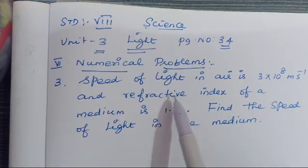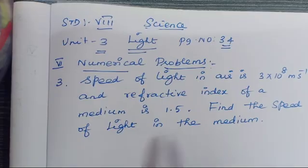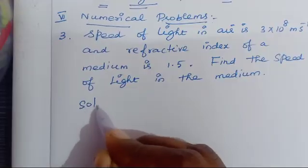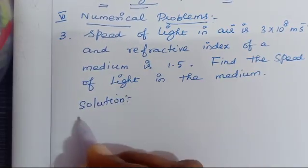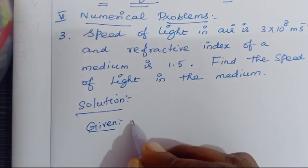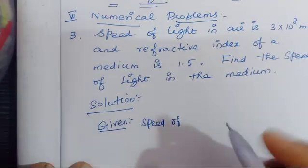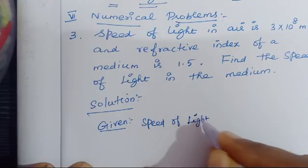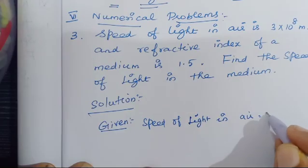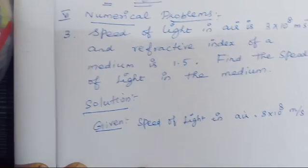Find the speed of light in the medium. In this question, speed of light in air is given and refractive index of a medium is given, and we have to calculate the speed of light in the medium. So let me move on to the solution. The first step is 'Given.' Speed of light in air is equal to 3 into 10 power 8 meter per second.